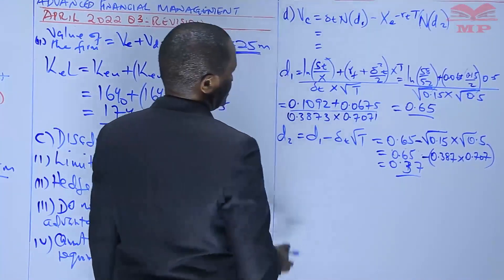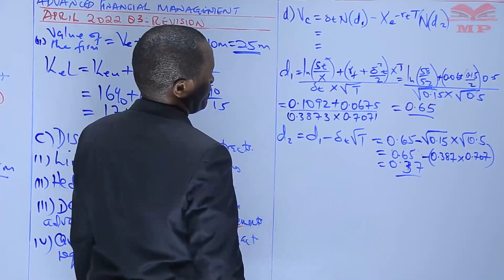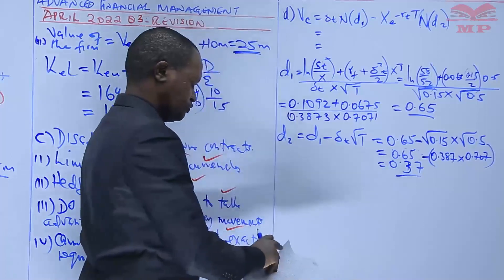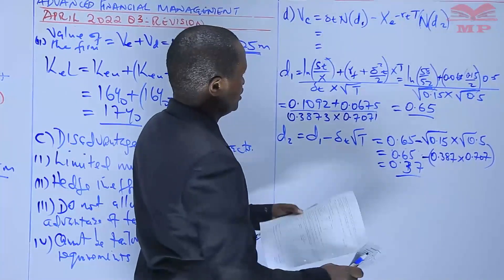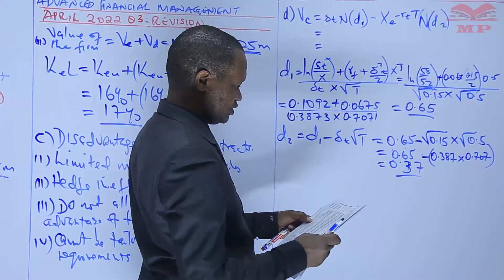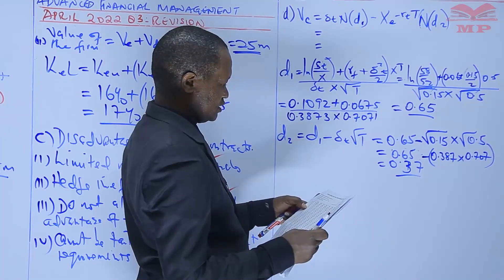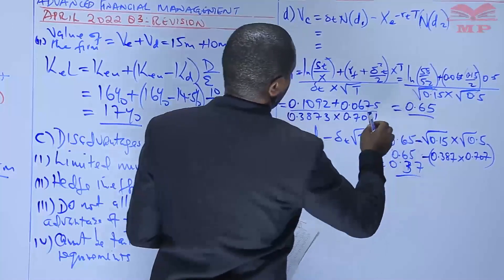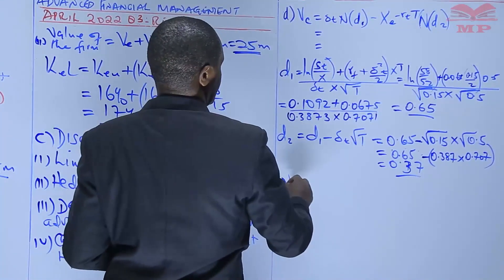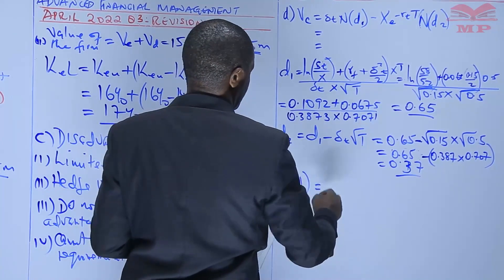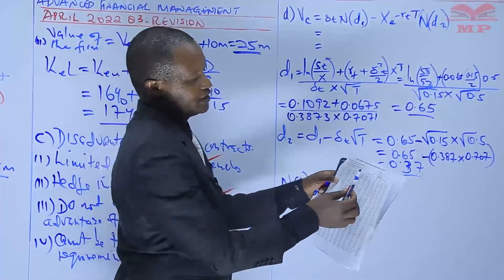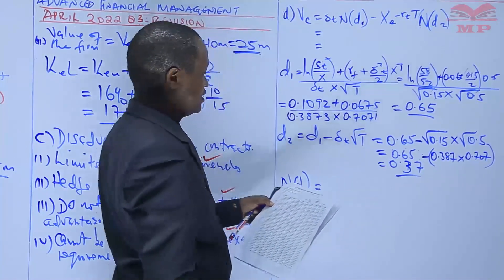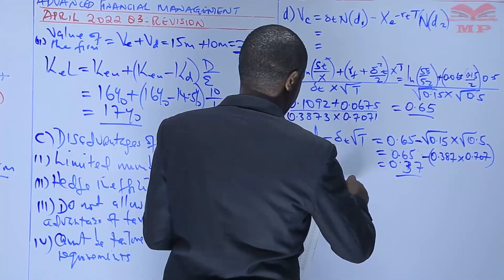Now we have done D1 and D2. The next step is to move to the normal distribution table and put down the values for D1, which is 0.65, and D2, which is 0.37. We are calculating N(D1) and N(D2). Given that this is a one-tail standard normal distribution and the tail is on the right-hand side, our figure will be 0.5 plus the table value.